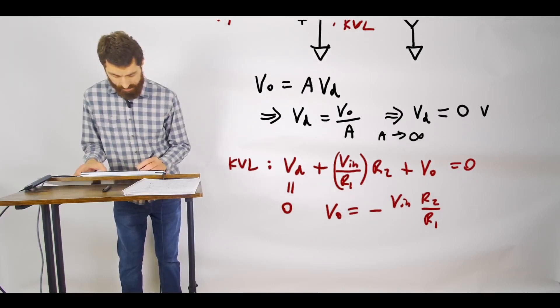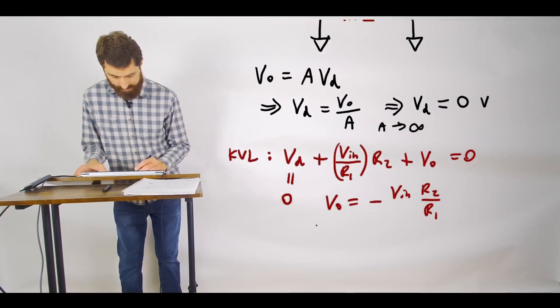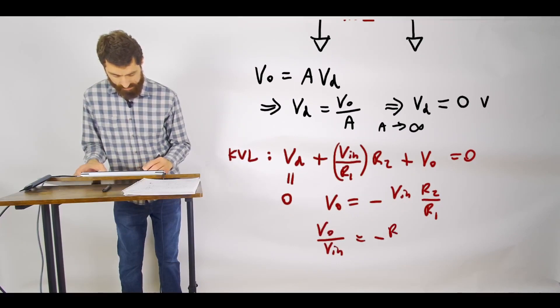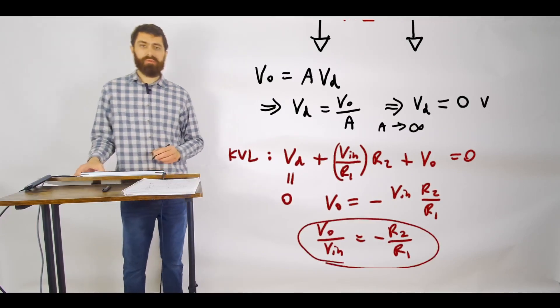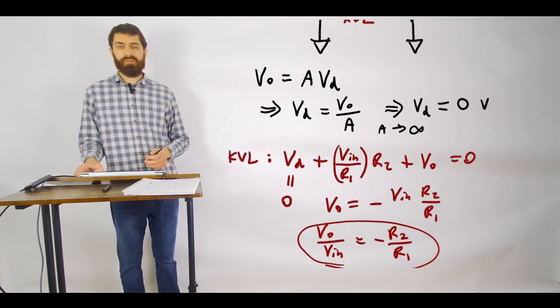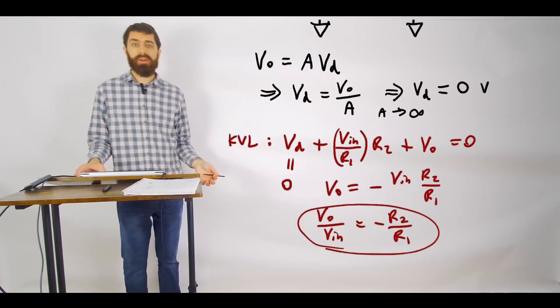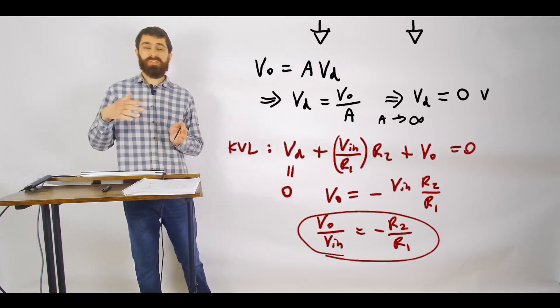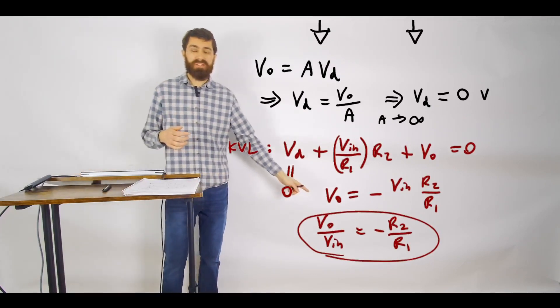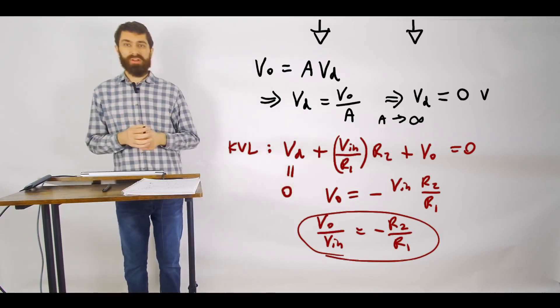And then so we can then just solve. Here we have V0 is equal to negative VN times R2 over R1. And so we get the result that V0 over VN is equal to minus R2 over R1. So that was what we were trying to solve. And this is what you call basically an inverting amplifier configuration because it boosts the magnitude of your voltage, but then because of the negative sign, it flips the polarity of it.